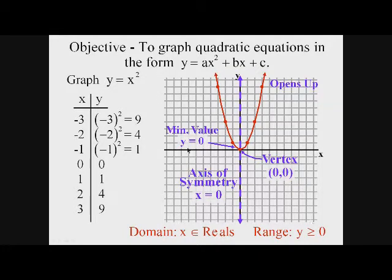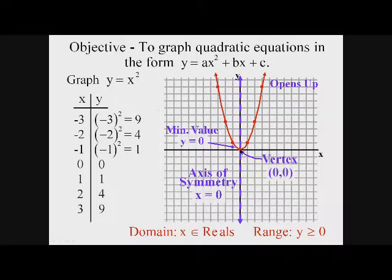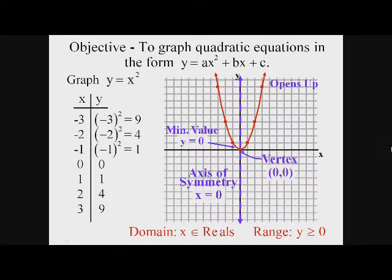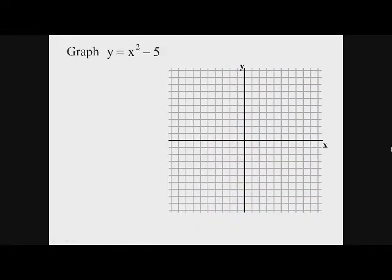Notice the difference between the minimum value and the range — they're related, but they're asking different questions. The minimum value asks: what is the smallest y could be? The answer is 0. The range asks a more general question: what could y be? And y could be anything as long as it's greater than or equal to 0.